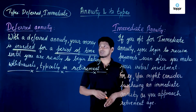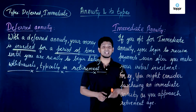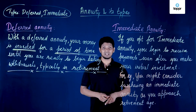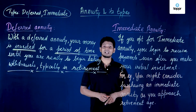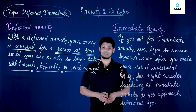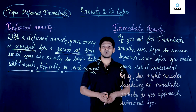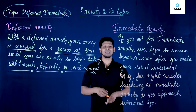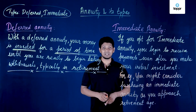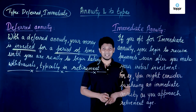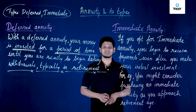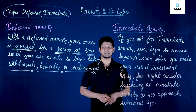So that was deferred annuity and immediate annuity — the types of annuity — and earlier we covered the definition of annuity. With that, the topic of annuity and its types is completed. Hope you liked the video. We will meet again in the next video very soon. Till then, goodbye.